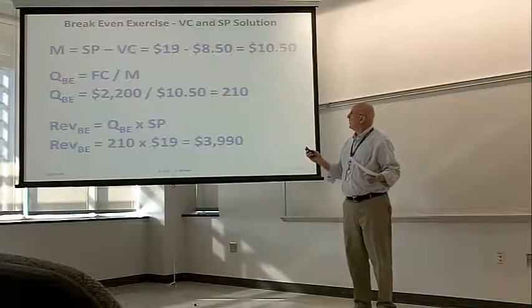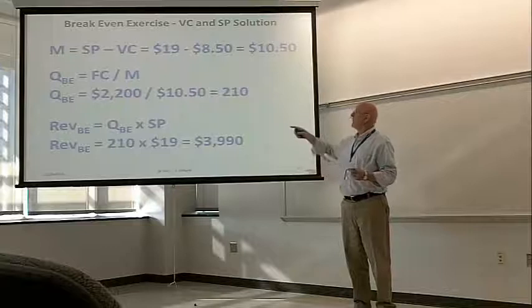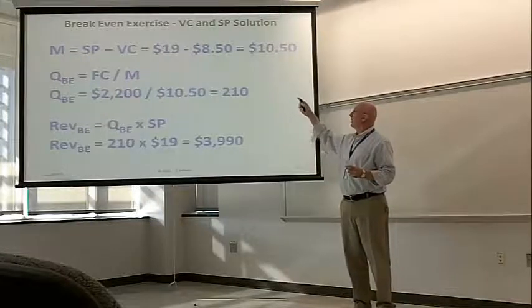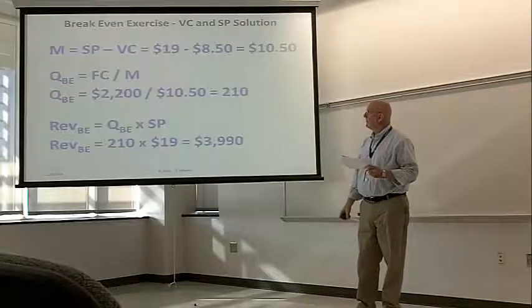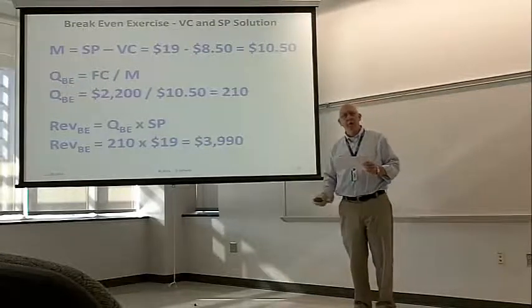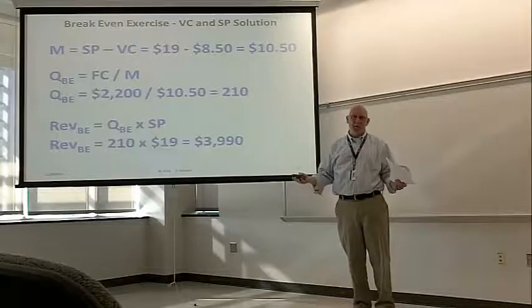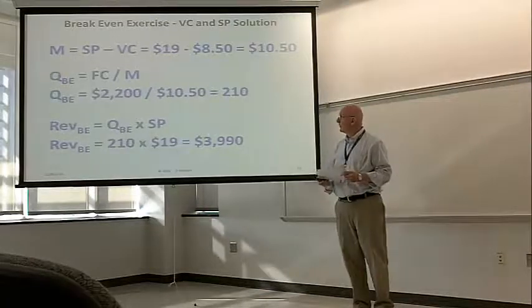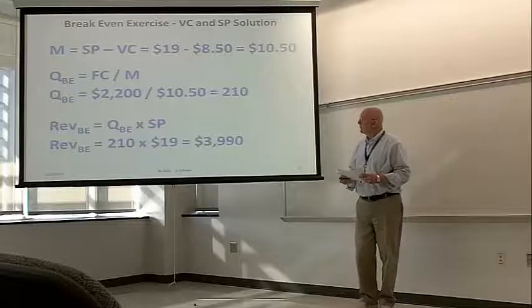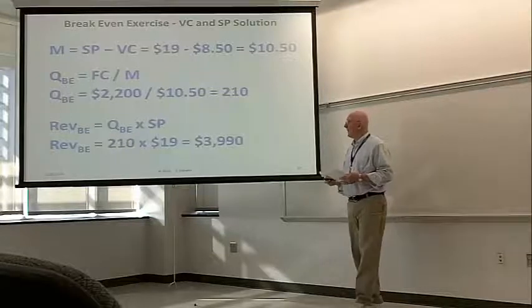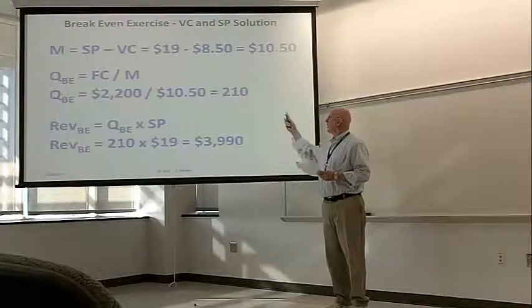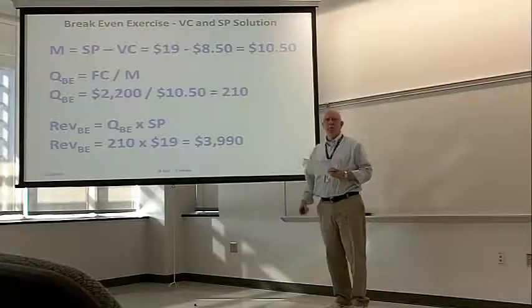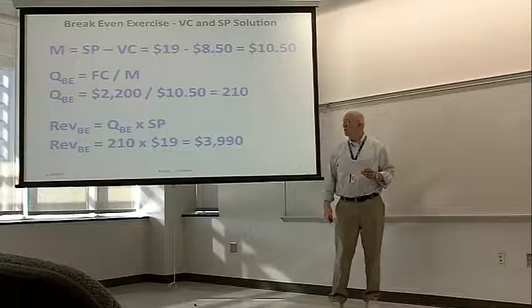So the margin is selling price minus the variable cost, $19 minus $10.50 margin, earnings, or unit profit, whatever, however you like to refer to it. Quantity is the fixed cost of $2,200 divided by the $10.50 margin or 210 items to be made and sold, no inventory.